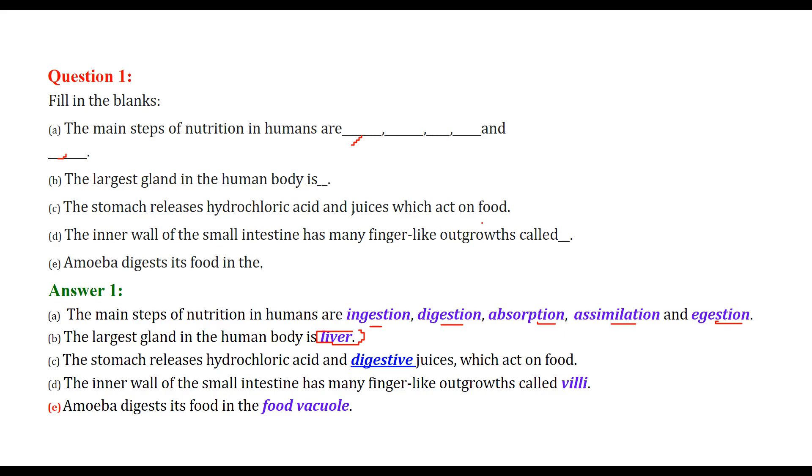The largest gland in human body is liver. The stomach releases hydrochloric acid and juices which act on food. So what are these juices? These are digestive juices. The inner wall of small intestine has many fiber-like outgrowths. We call them as villi. Amoeba digests its food in the food vacuole.